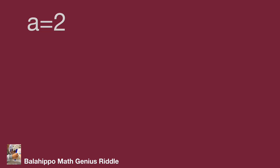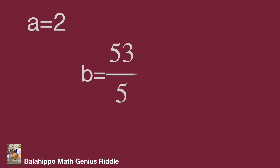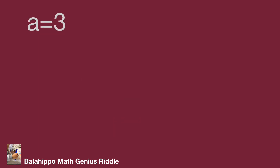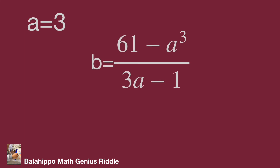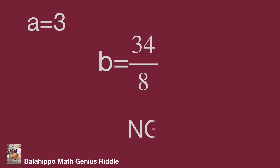When a equals 2, substitute a by 2 into b equals (61 minus a cubed) over (3a minus 1). We get b equals 53 over 5, which is not an integer, so it is not a correct value. Therefore, we get one number group for x and y: x equals 6 and y equals 5. Do you get the same result? Hope you enjoyed the video. Thank you.